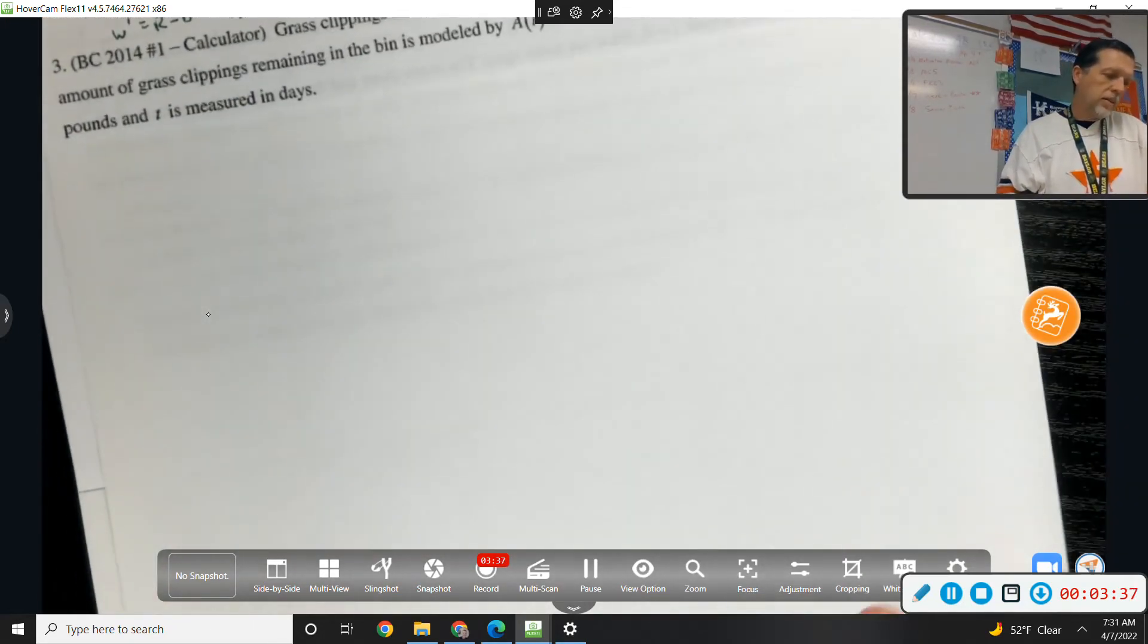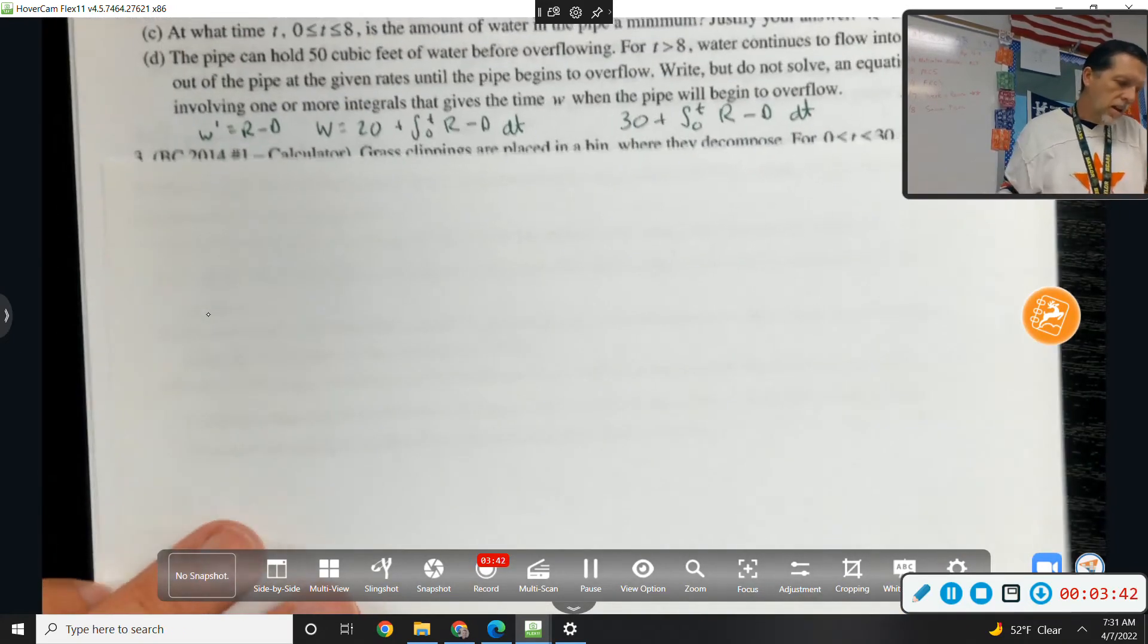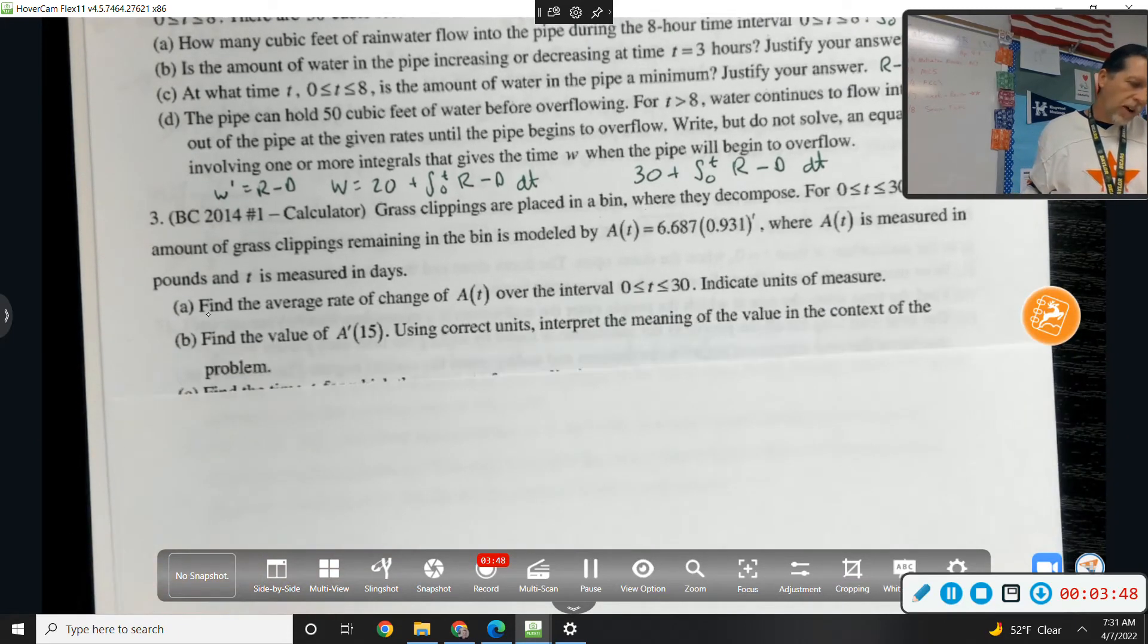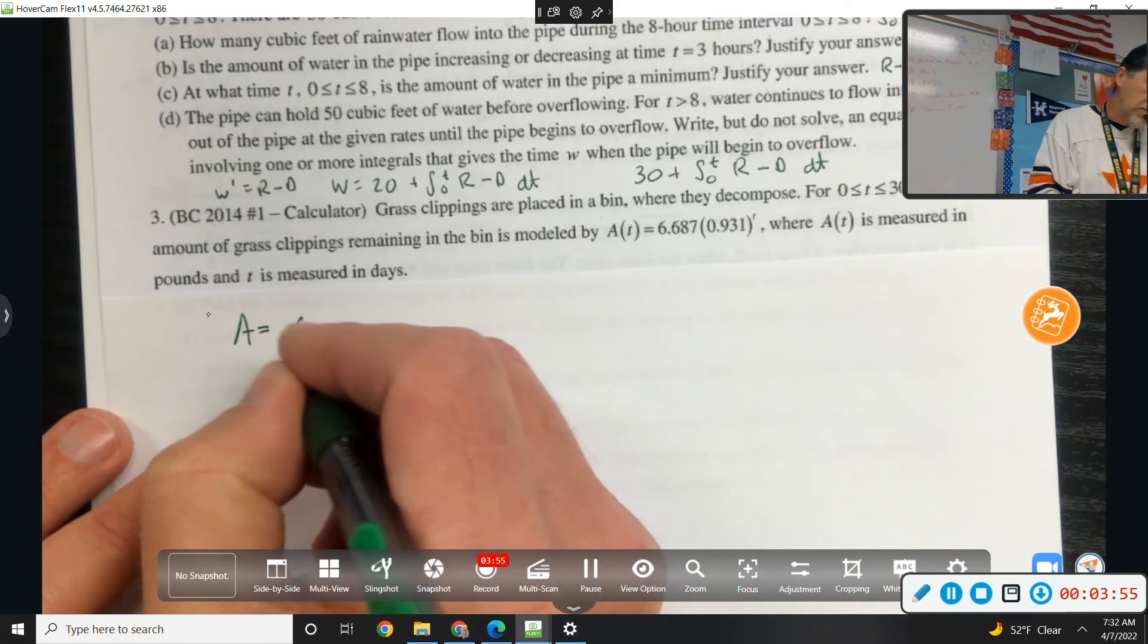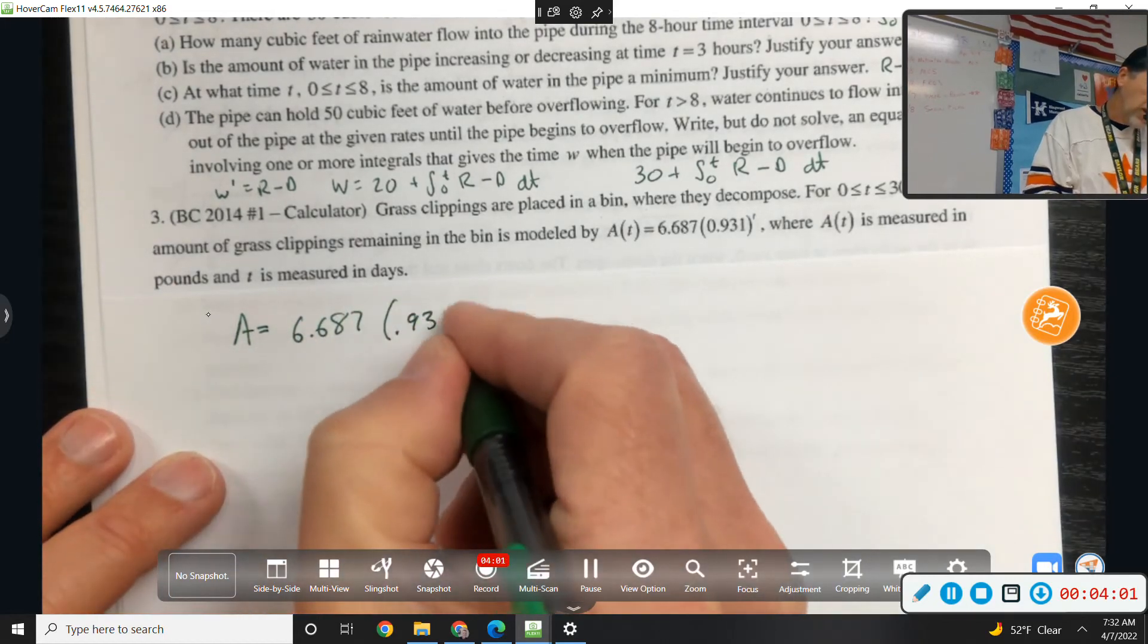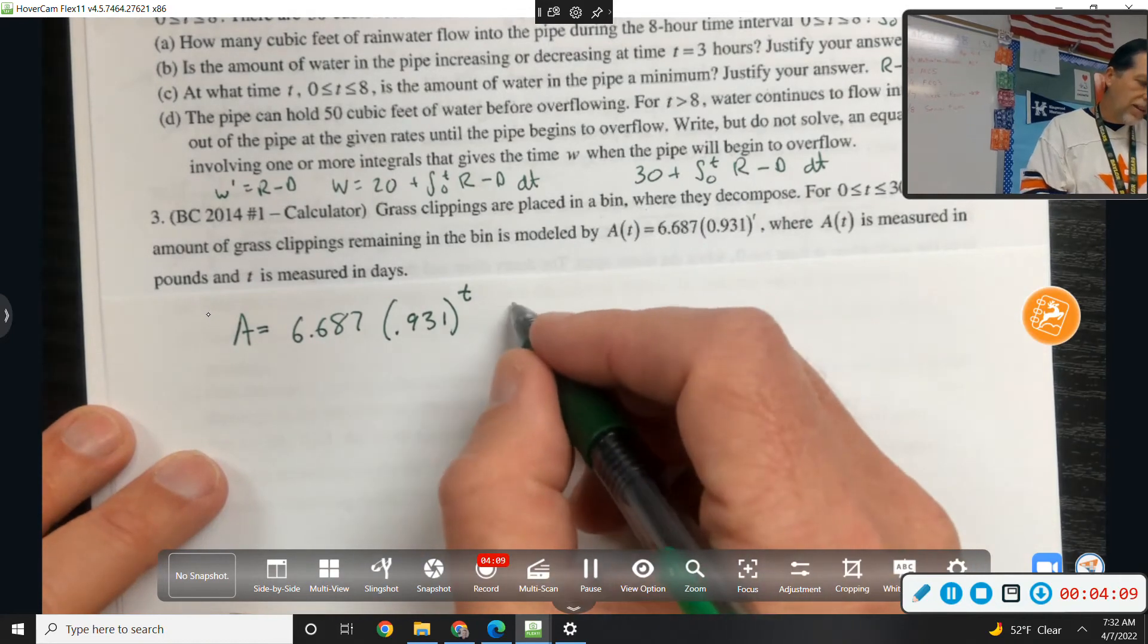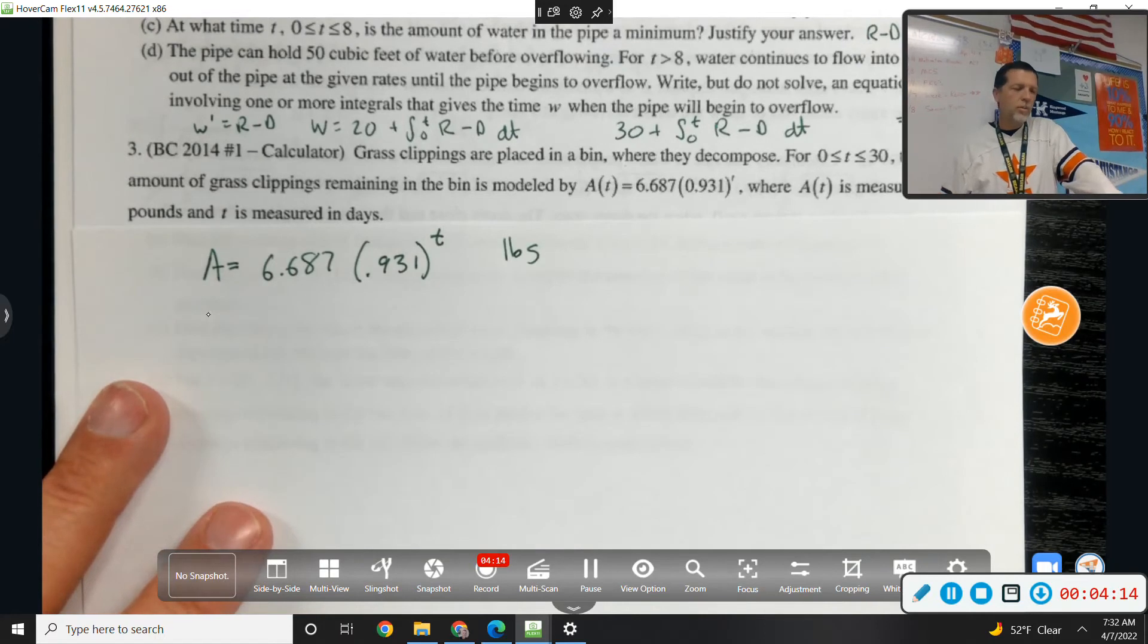Alright, grass clippings problem. Grass clippings are placed in a bin where they decompose. For 0 to 30, the amount of grass clippings remaining in the bin is modeled by 6.687 times 0.931 to the t. Where a is measured in pounds and t is measured in days. So a is not a rate. That is pounds of grass sitting in the bin.